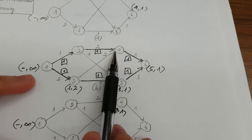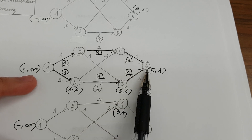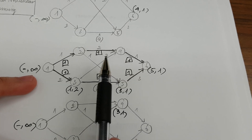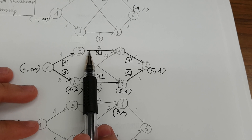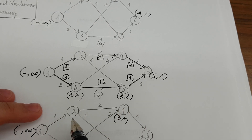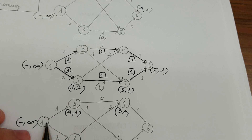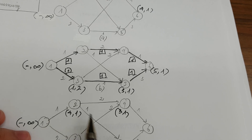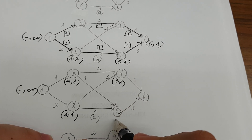From node 4 we scan and there are two nodes: node 2 and node 6. However, the connection between node 4 and node 6 is already full, so we follow the inverse connection from node 4 to node 2 and label it (4, 1). From node 2 we scan nodes 1 and 5, but node 1's connection is already full, so we label node 5 as (2, 1).